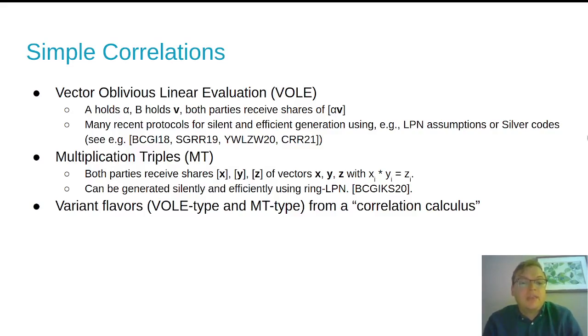I'll mention quickly that there are a number of variants of VOLE-type and MT-type randomness, which can be understood as sort of forming a correlation calculus when we described in the full version of this talk.